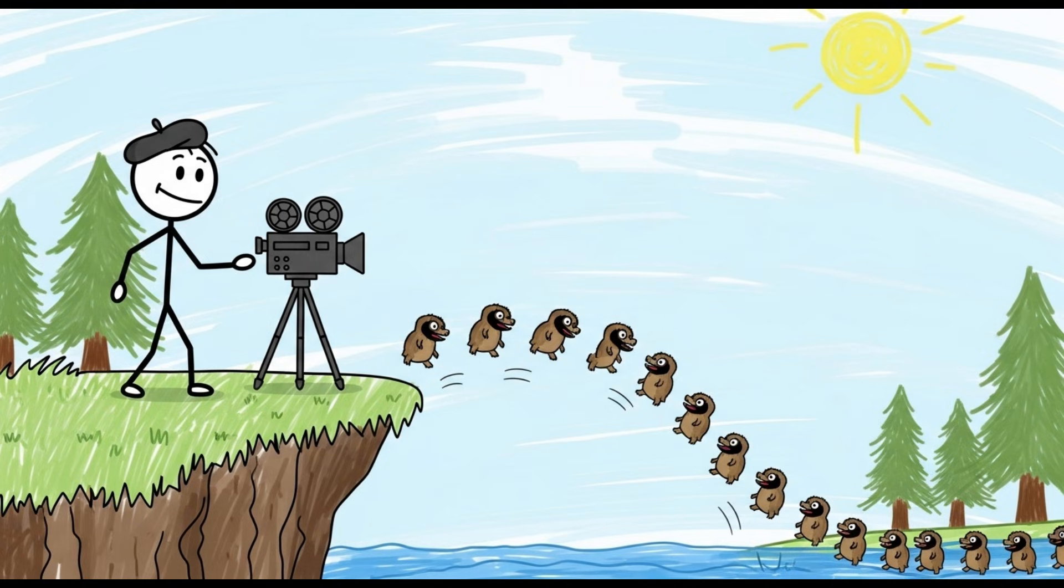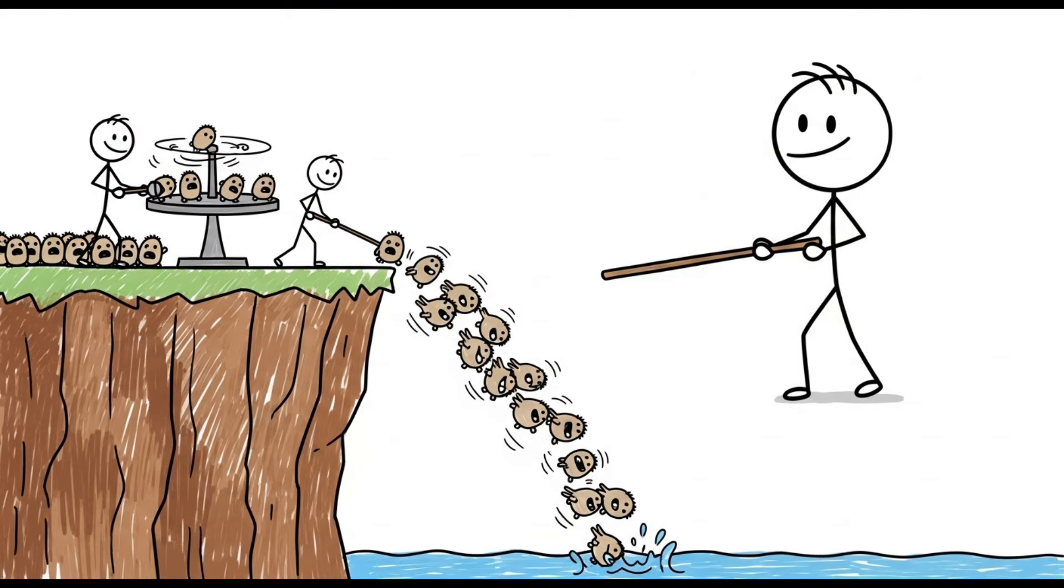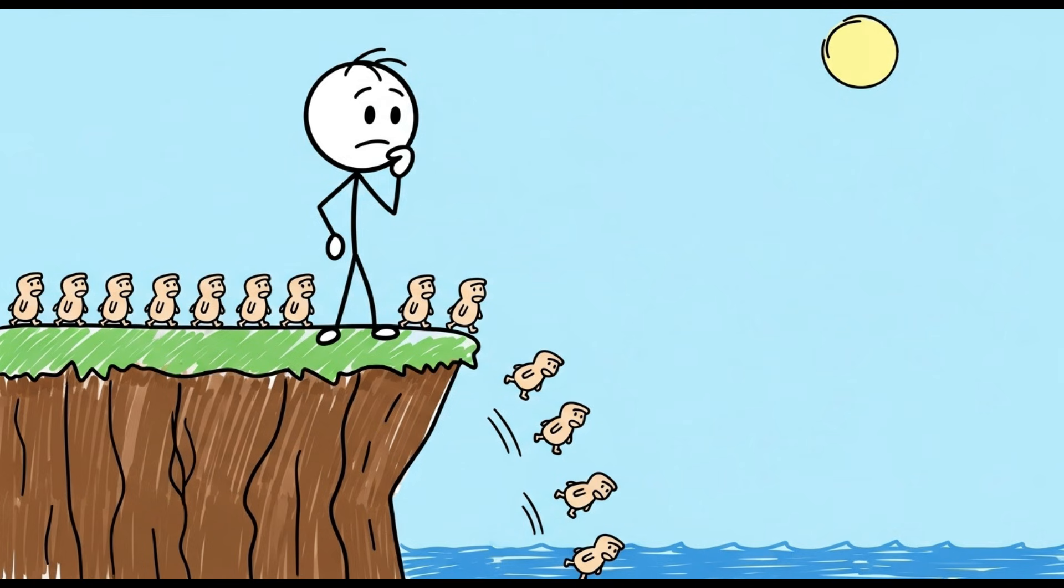The documentary was filmed in Alberta, Canada, a landlocked province with no native lemming populations and certainly no nearby ocean. The crew bought the lemmings from local kids, put them on a spinning turntable to create a sense of frantic disorientation, and then literally herded them off a cliff into a river. So, what do lemmings actually do?